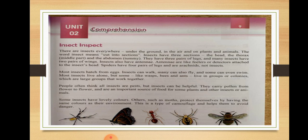Spiders have 4 pairs of legs, meaning they have 8 legs. Since insects have only 3 pairs of legs (6 legs), we do not call spiders insects — they are known as arachnids. Most insects hatch from eggs, meaning they come out from eggs.